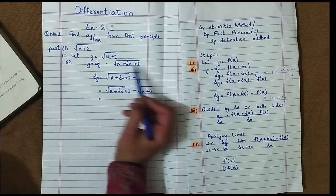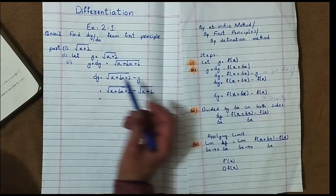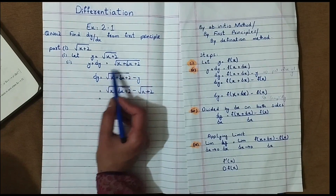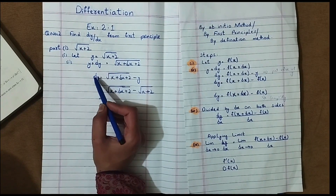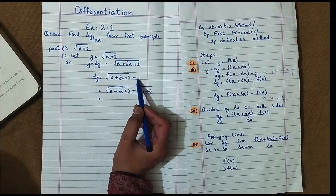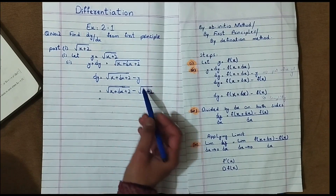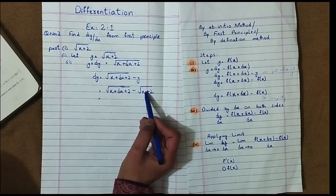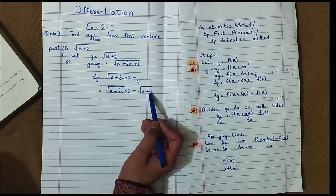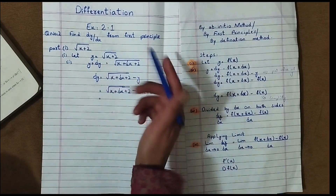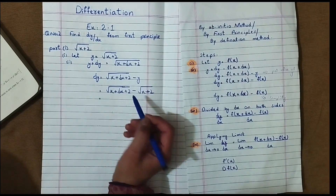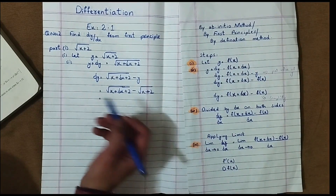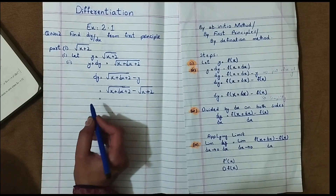Step 2: we add the incremental change on the left side. y plus delta y equals under root x plus delta x plus 2. We will put the value of y, which is under root x plus 2. We will simplify and rationalize this expression.